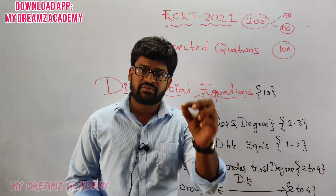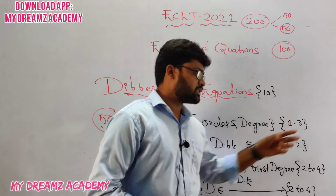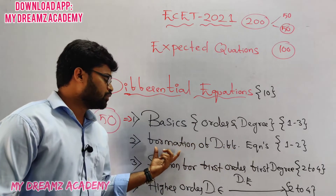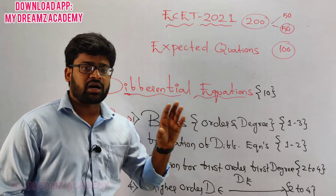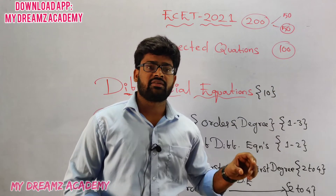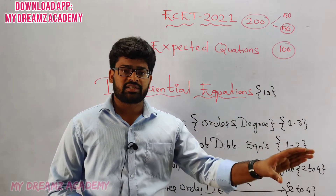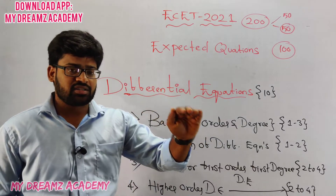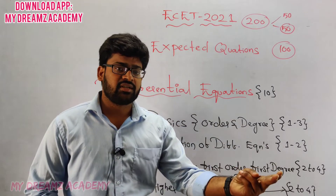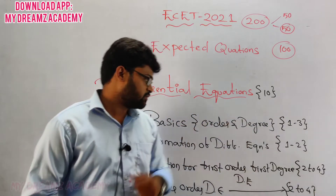From a normal equation, you have to form a differential equation. You have to find one differential equation, and for that you have to eliminate the arbitrary constants. If the number of arbitrary constants is 2, you have to differentiate 2 times, so that you will get a second order differential equation.